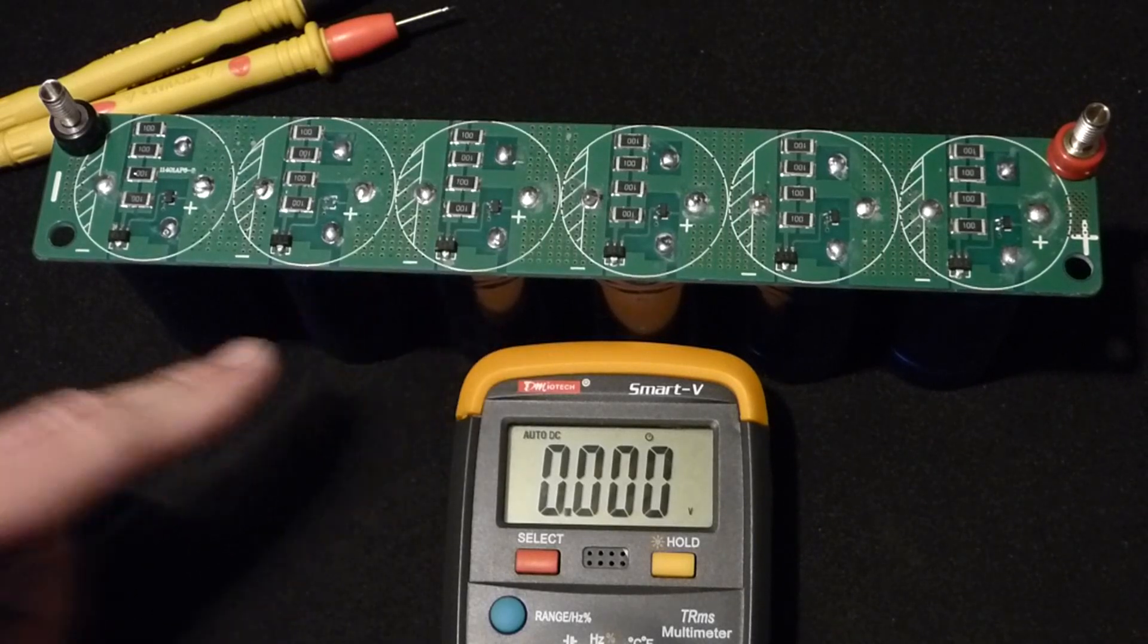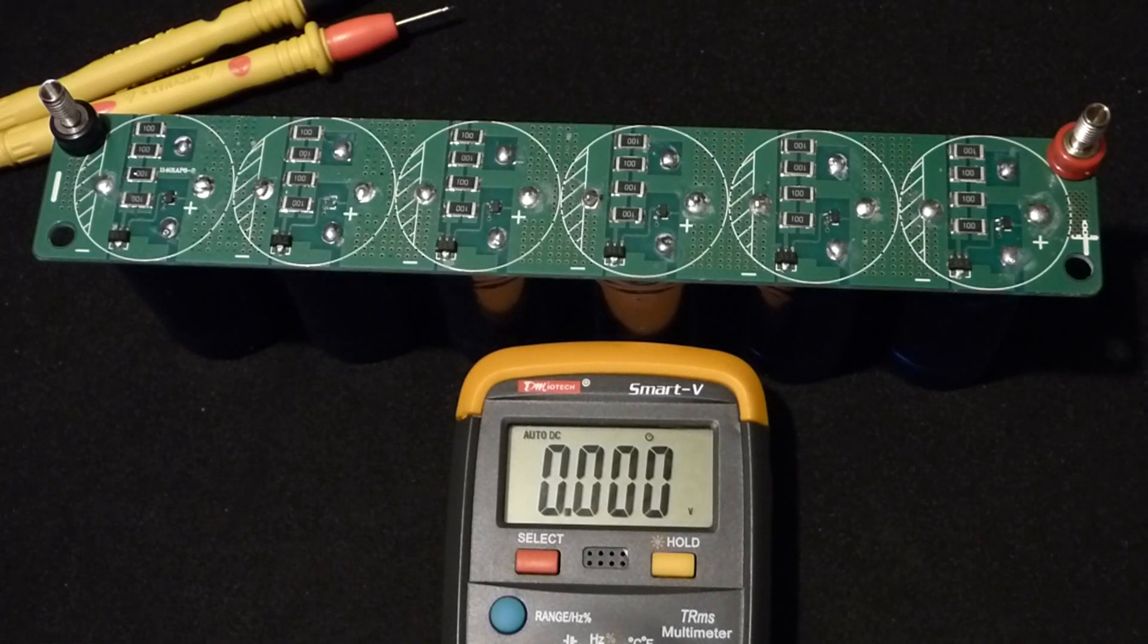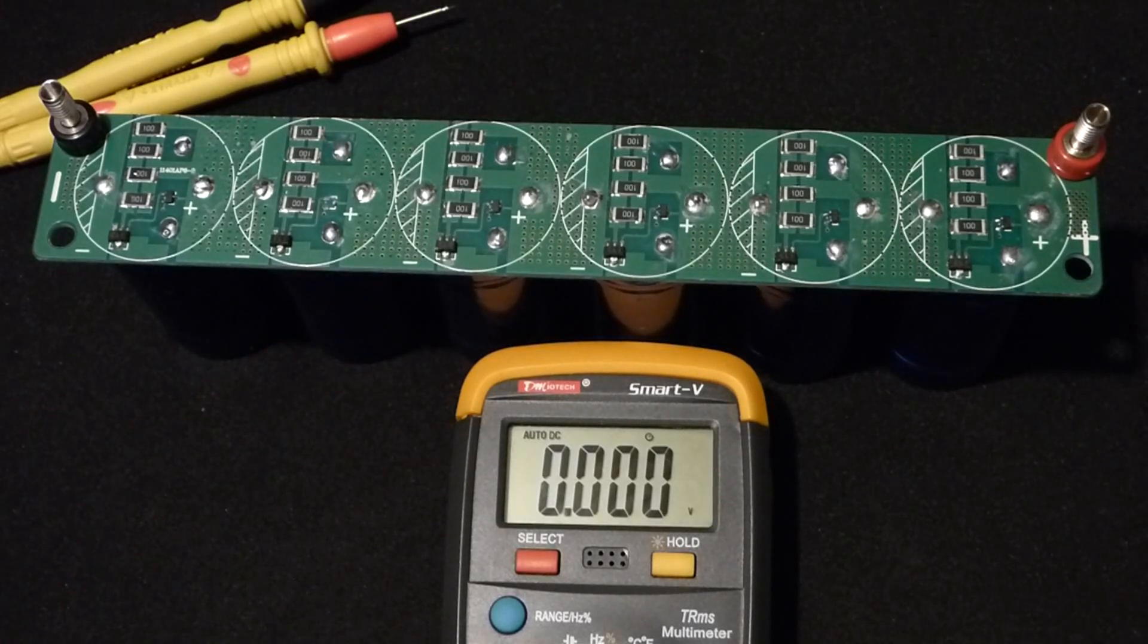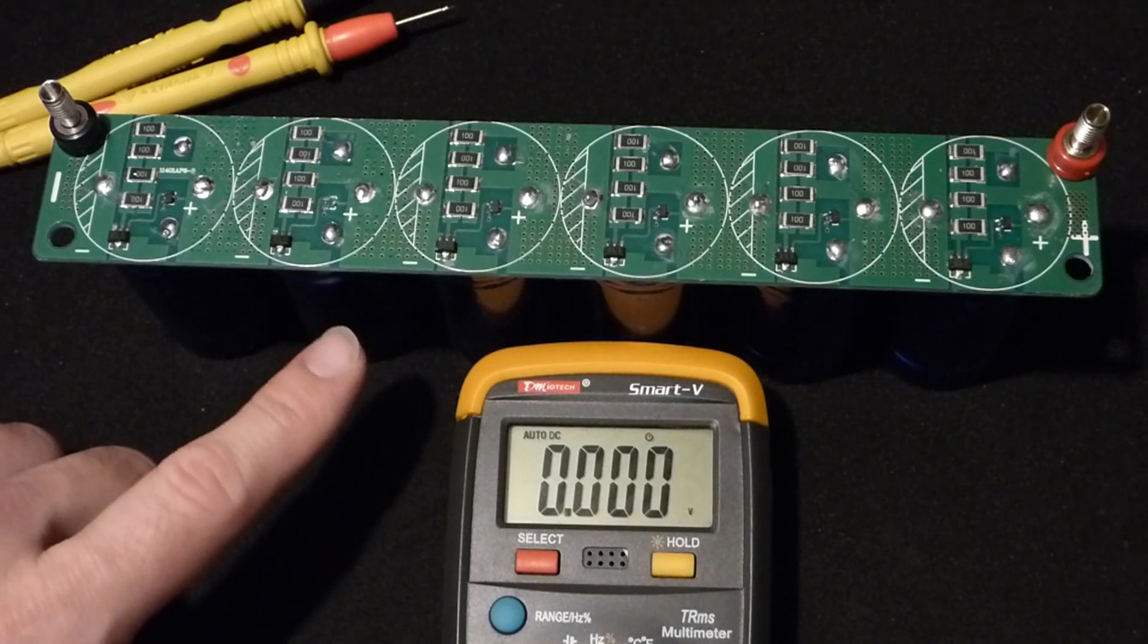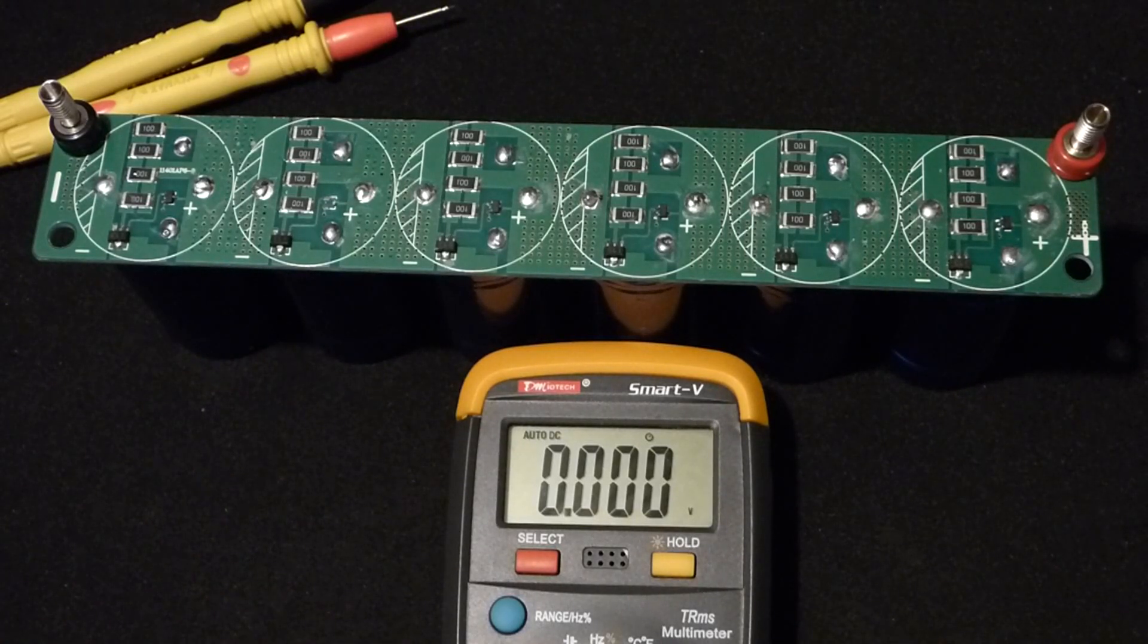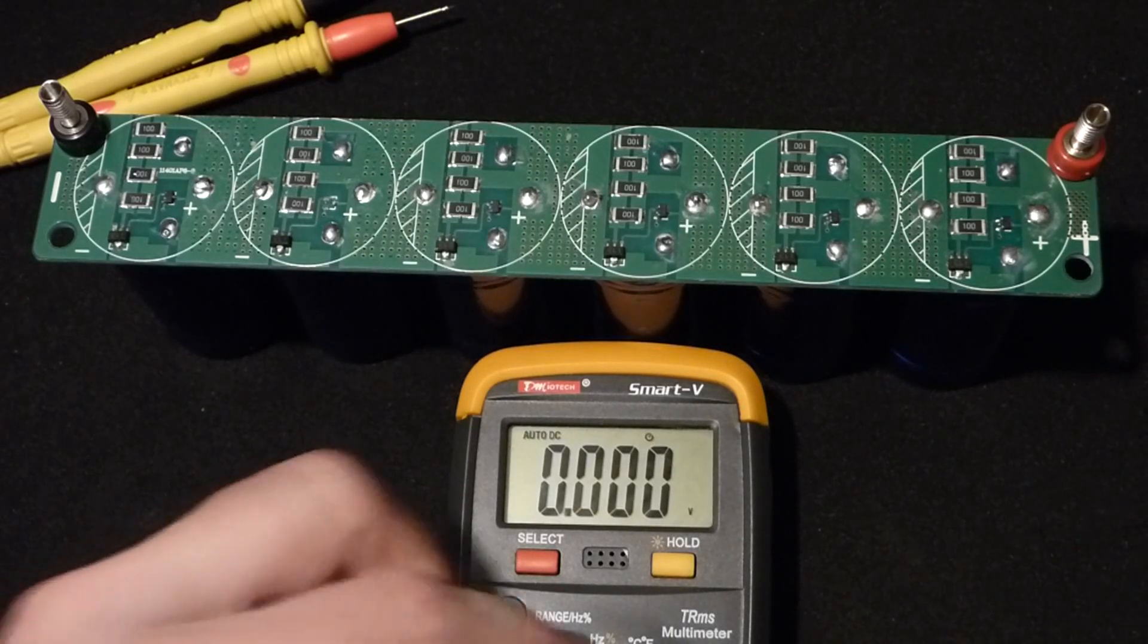That's to be expected with super capacitors though. They don't hold a voltage a long time like batteries do. The voltage tends to drop quickly at first and then at some point it should level off. Looks like we leveled off about nine volts. That's something to be aware of with super capacitors. You really need to charge them shortly before you use them to get the full voltage.